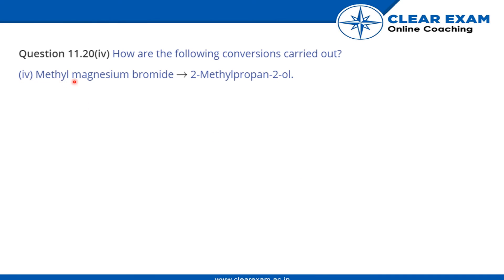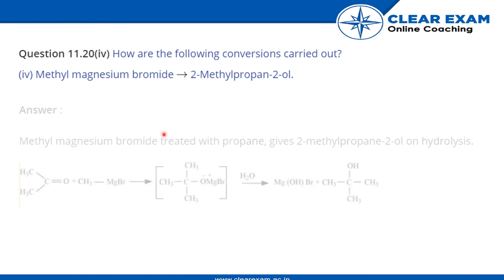Methyl magnesium bromide to 2-methylpropan-2-ol. This is methyl magnesium bromide which is a Grignard reagent, and this is acetone. When it reacts, this intermediate forms. When these two react and finally when we add water, this is formed which is 2-methylpropan-2-ol with Mg(OH)Br.